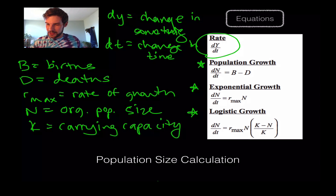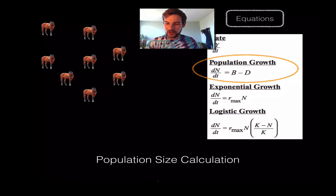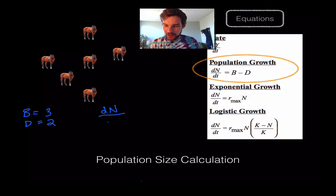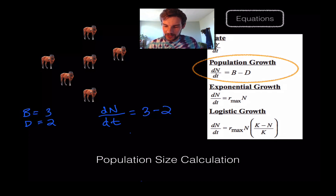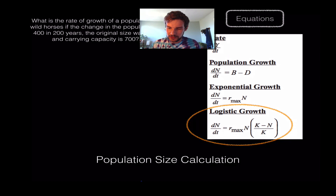Let's say we have a population of five horses and it increases to eight — so three were born and two died. Births: b = 3, deaths: d = 2. Plugging into the equation: dN/dt = b - d, so dN/dt = 3 - 2 = 1. That's a change in population of 1 over one year. Very straightforward.